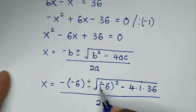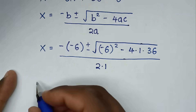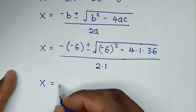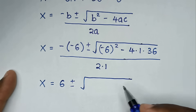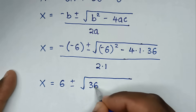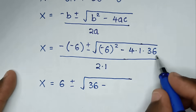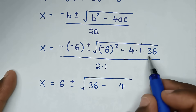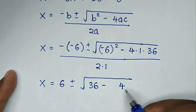In the next step, x is equal to 6 plus or minus square root of: negative 6 squared is 36, minus 4 times 1 times 36. Calculating 4 times 36: 4 times 6 is 24 and 4 times 30 is 120, giving 144, so minus 144.